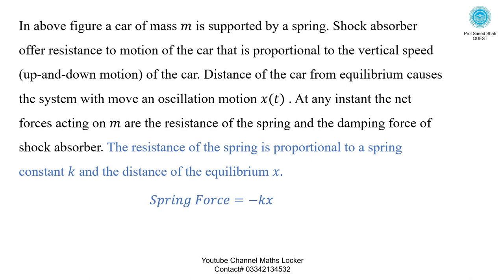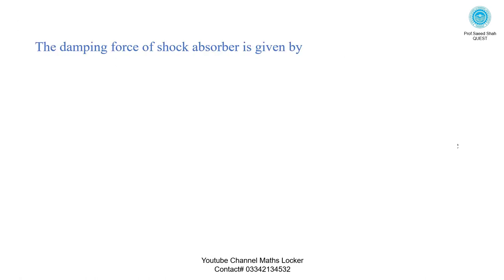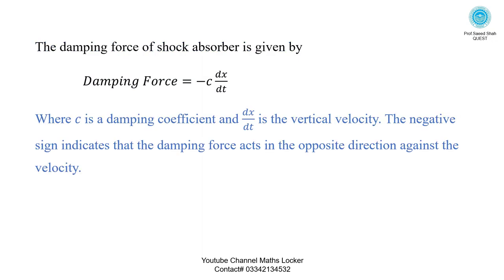The resistance of the spring is proportional to spring constant K and the distance from equilibrium X. By Hooke's law, spring force equals minus KX, where the negative sign indicates that the restoring force returns the car towards the position of equilibrium. The damping force equals minus C times dx/dt, where C is the damping coefficient and dx/dt is the vertical velocity. The negative sign indicates that the damping force acts in the opposite direction against the velocity.